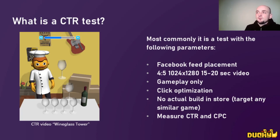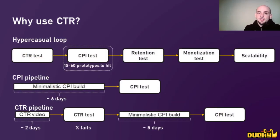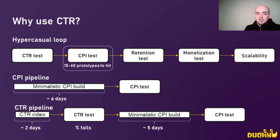At the CTR stage, about 3 out of 4 videos will fail. So in 3 out of 4 times you don't have to actually build a game to test its CPI. How does it help us? How does it reduce time? Here is a typical hypercasual loop. You have to pass all stages of the hypercasual loop and at every stage you have a chance to fail. There are different estimates of how many prototypes you need to eventually make a hit. The most common estimates lie between 15 to 60 prototypes — we'll take 40 as an example.